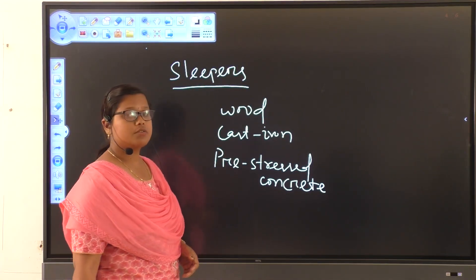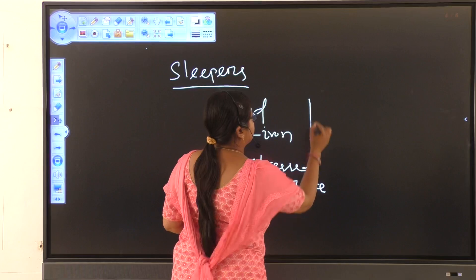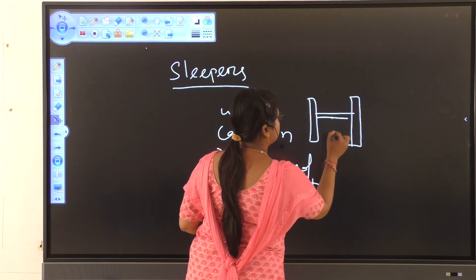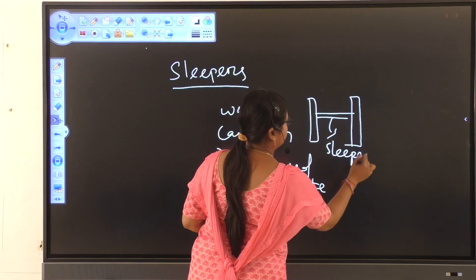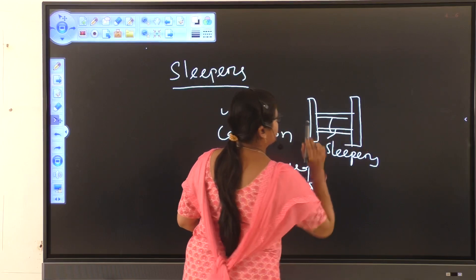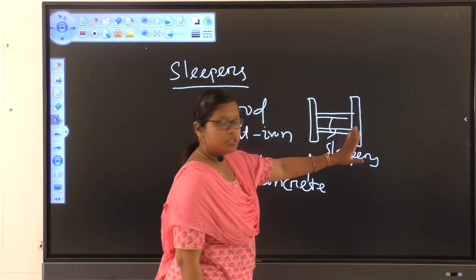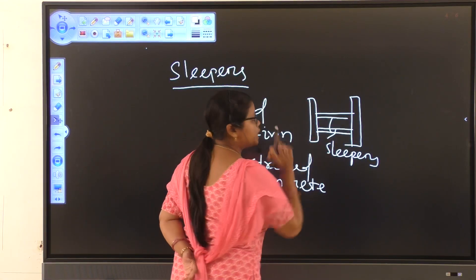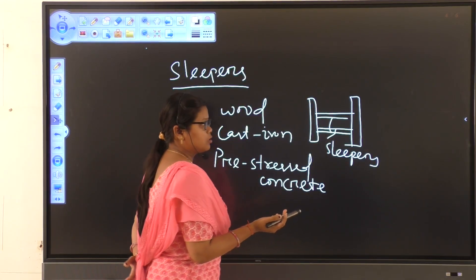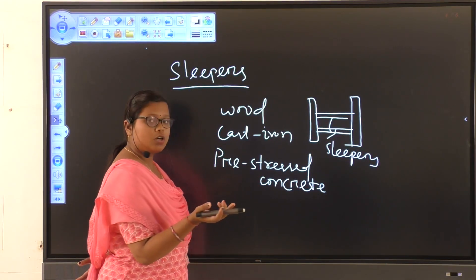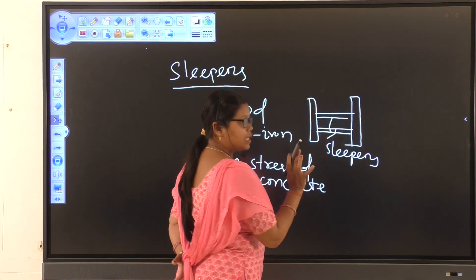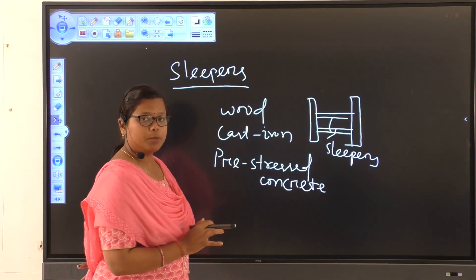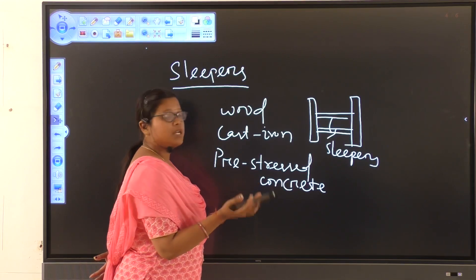So what are the uses of sleepers? Sleepers holds the rails in position. And the distance, the horizontal distance between the two rails is known as gauge. The inner distance between the two rails is known as gauge. So, the cost of a permanent way per kilometer per rail is depends upon the gauge.